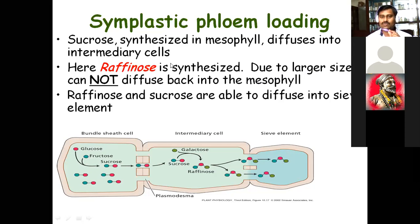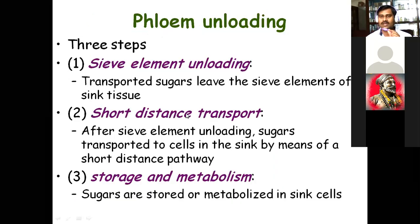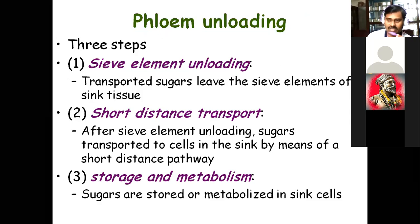Due to its larger size, raffinose moves to another cell but cannot diffuse back into the mesophyll cell. As sucrose moves it converts into raffinose, or is later converted back into sucrose. Only the movement of sucrose takes place ultimately. In the phloem, particularly sieve elements are involved in the transport of sugar.